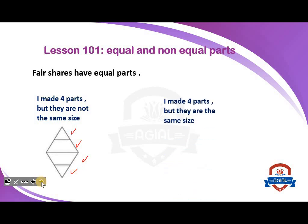I made four parts and they are the same size, like this shape. This shape is divided into four parts, but they are equal. We have one, two, three, four — four equal parts.